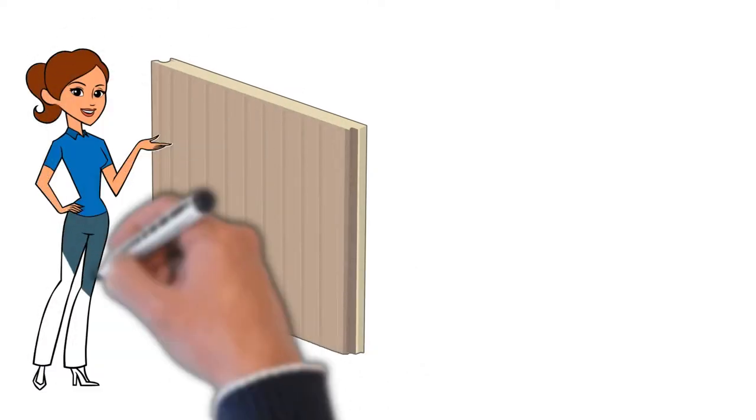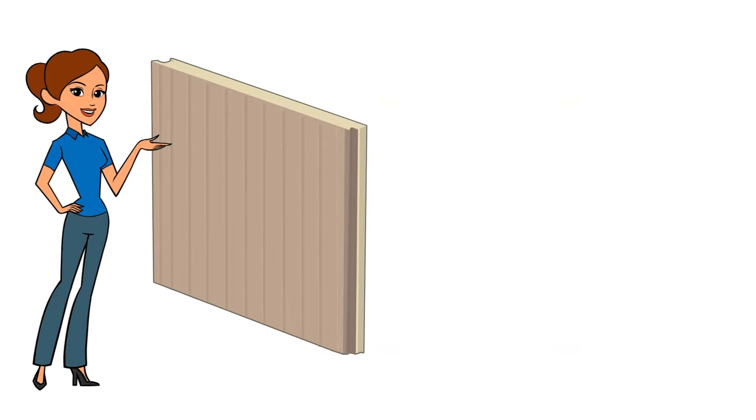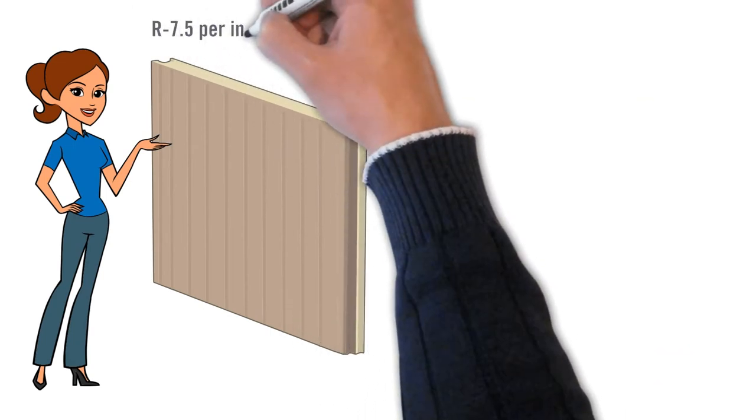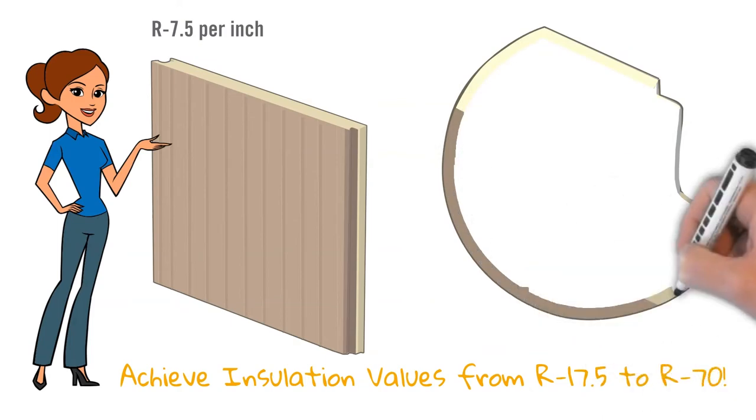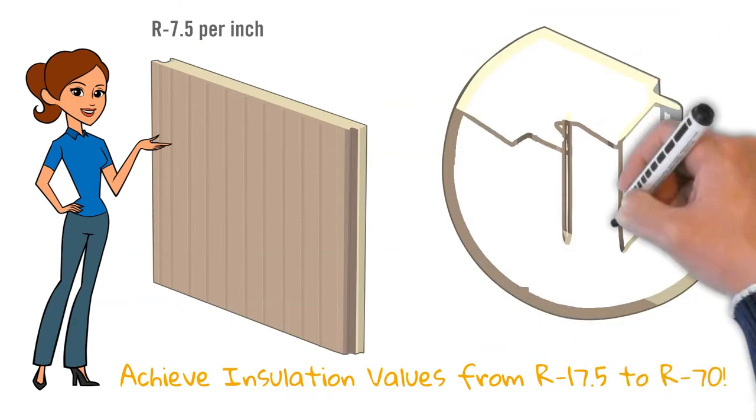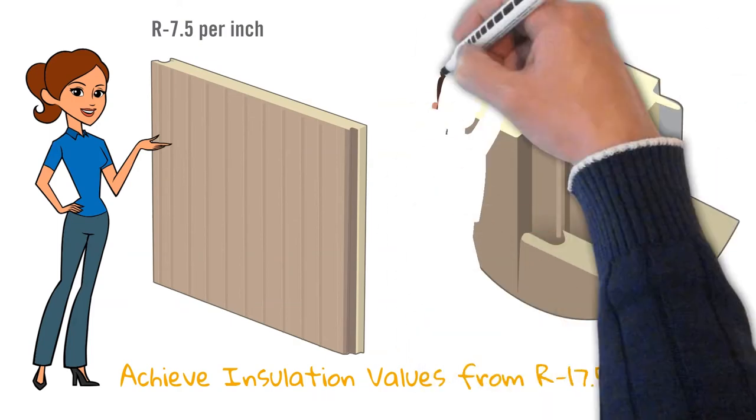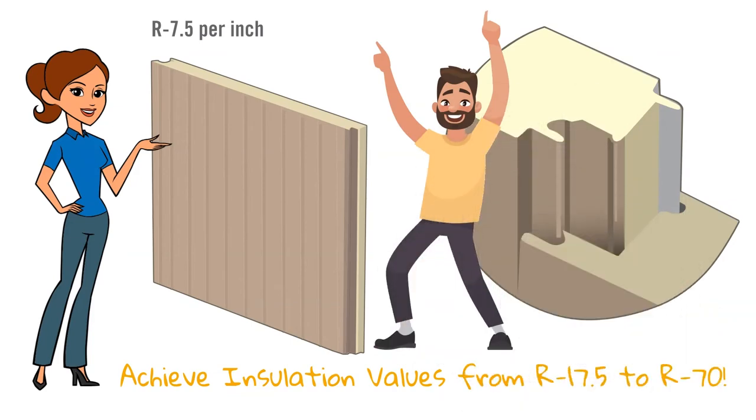Our Class A PUR Foam Core is the most affordable IMP option for high R-value on the market, delivering 7.5 R-value per inch. With Metalspan IMPs providing R-values from R17.5 to a whopping R70, you can easily meet and exceed energy code requirements in any climate zone.